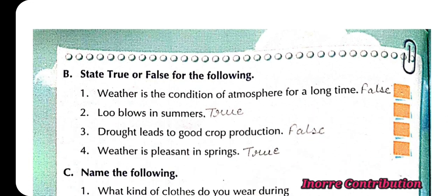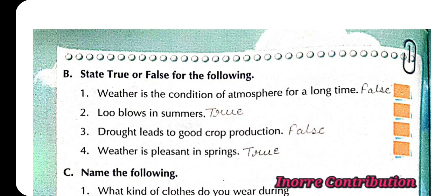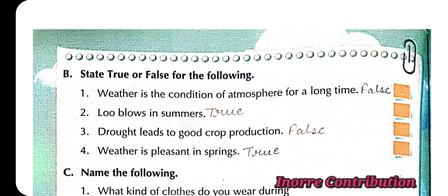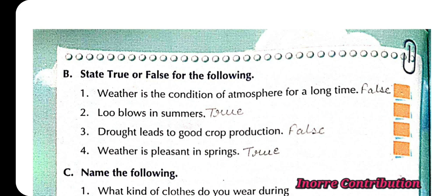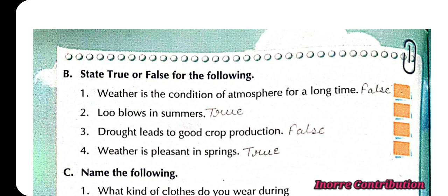State true or false for the following. 1st: Weather is the condition of atmosphere for a long time — false. 2nd: Loo blows in summer — true. 3rd: Drought leads to good crop production — false. 4th: Weather is pleasant in spring — true.